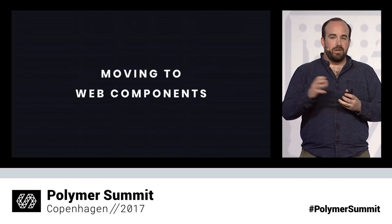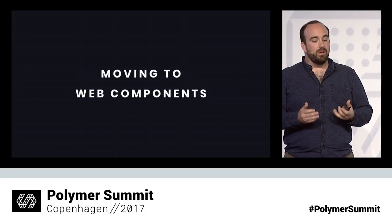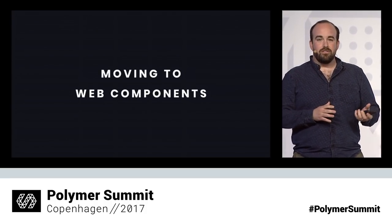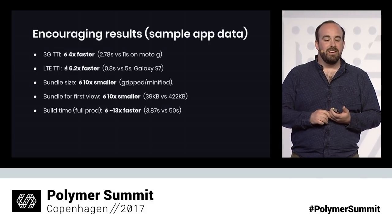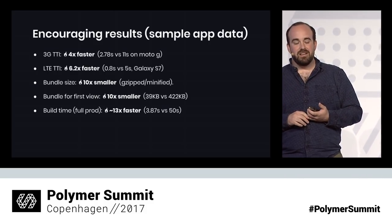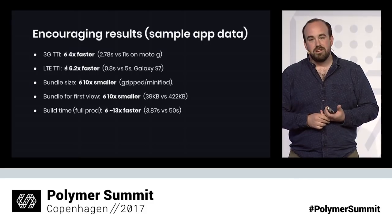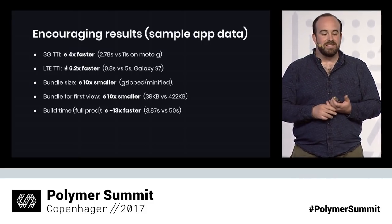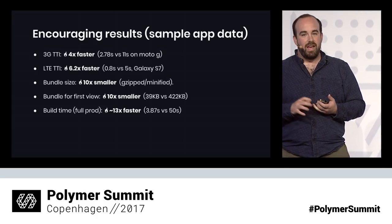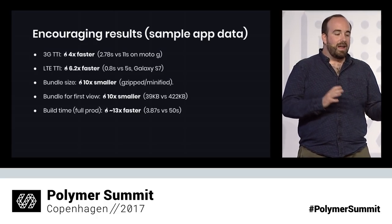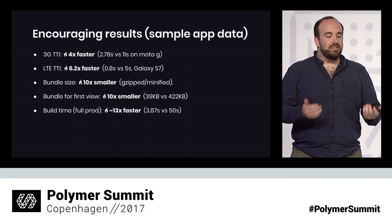Then we started experimenting with web components. We started taking our Angular components and porting them to vanilla web components, and it was actually really, really promising. It ported over really well from Angular 2, and I give the Angular API a lot of credit for being similar to web components. Our first results were really encouraging: our 3G time to interactive was four to six times faster — 2.78 seconds compared to 11 and 13 seconds before. We were shipping 10 times less code for the first view — 39 kilobytes compared to 422. And build times went from 50 seconds to 3.87 seconds.